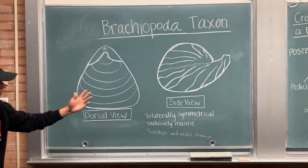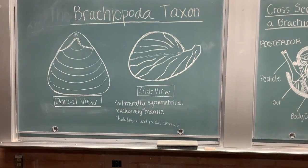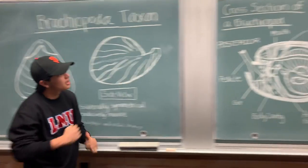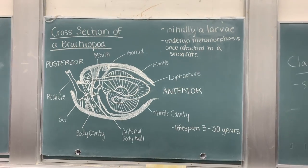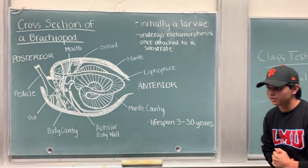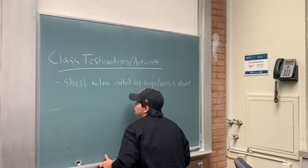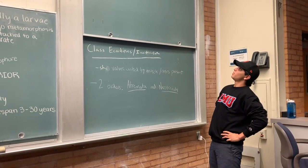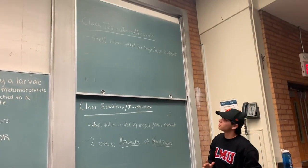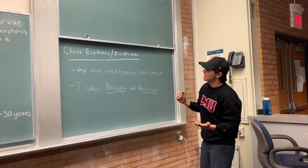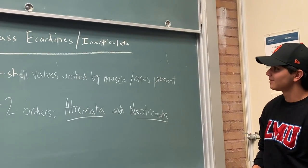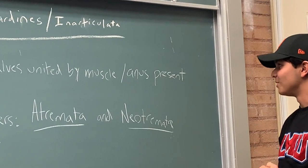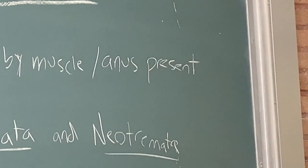Brachiopod taxon: dorsal view, side view, bilaterally symmetrical, exclusively marine, includes holoblastic and radial cleavages. Cross-section of the Brachiopod — initially a larva, undergoes metamorphosis once attached to a substrate. Has a lifespan of 30 years. Two classes of the Brachiopod: testicardines or Articulata — shell valves united by hinge, anus is absent; and the second class, ecardines or Inarticulata — shell valves united by muscle, anus present — with two orders: Atremata and Neotremata.